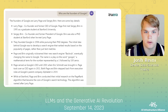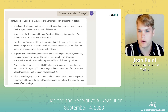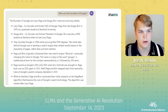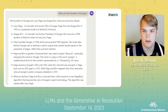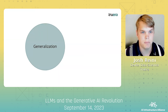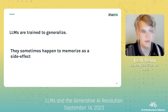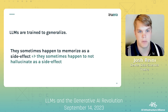Alternatively, when I asked the question who are the founders of Google, the model is able to successfully respond with Larry Page and Sergey Brin, along with the founding story. The model has seen the story enough times where it's able to memorize it — in other words, the model was able to avoid hallucination. LLMs are trained to generalize; they sometimes happen to memorize as a side effect. Said another way, they sometimes happen to not hallucinate as a side effect.